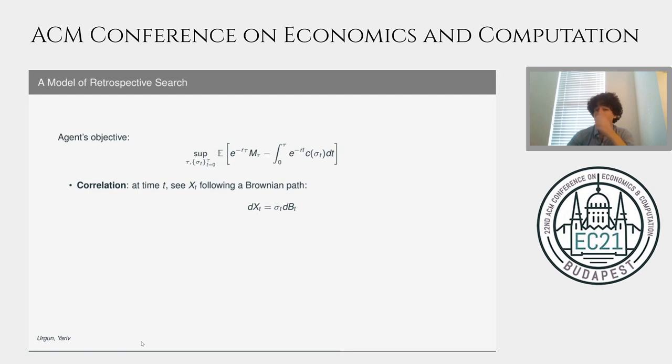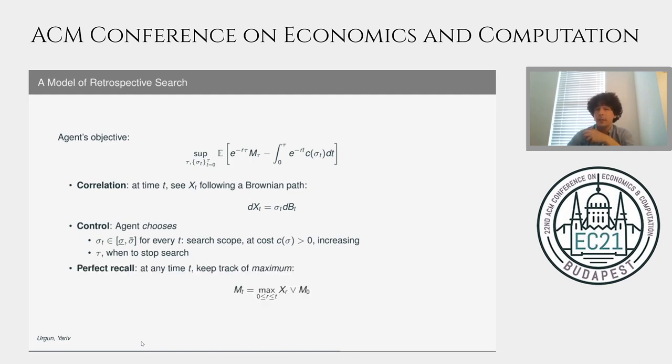Formally, we are going to capture this correlation across outcomes with a Brownian path. But the width of the search, the scope, is going to be our agent's control. And our agent is going to decide when to stop. And at the time of stopping, they will receive the best outcome they have seen.